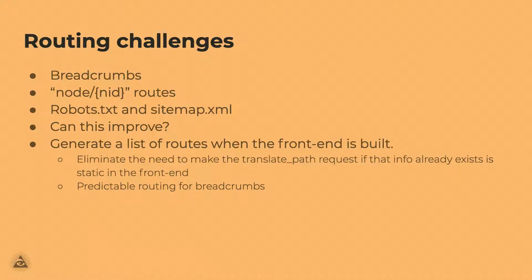How can routing improve? The challenge is syncing things so the front end matches the back end exactly. One idea we've thought of is having routing information actually live on the front end — rather than hitting Decoupled Router on every request, maybe generate a file that the Next.js application only has to look at in order to continue routing, so it doesn't have to make that request every time. This is about speeding up communication in the stack, which is very important.